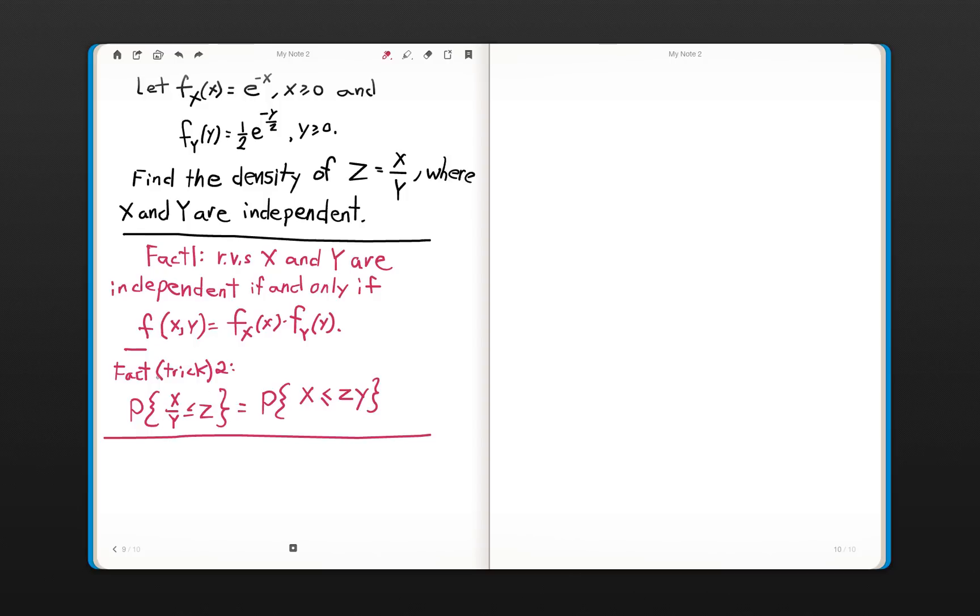And so another fact, which is not really a fact, it's just a trick. It's something that you may not realize to do immediately, and then after you see how to do it, you think, oh, I should have thought of that. And it's the probability of X divided by Y is less than or equal to Z, where Z is a fixed variable, is just equal to probability of X is less than or equal to Z times Y.